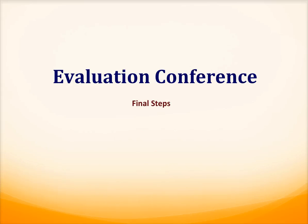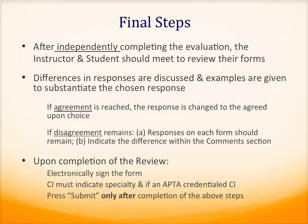This last section highlights the evaluation conference and all that should take place during and after this review with your student. After the CI and student independently complete the evaluation, they should meet to review their forms. Differences in responses are discussed and examples are given to substantiate the chosen response. If agreement is reached, the response is changed to the agreed-upon choice. If disagreement remains, the responses on each form should remain; however, indicate the difference within the comments section. Upon completion of the review, the CI and student should electronically sign the form. The CI must indicate his or her specialty and if they are an APTA credentialed CI. Press submit only after completion of the above steps.